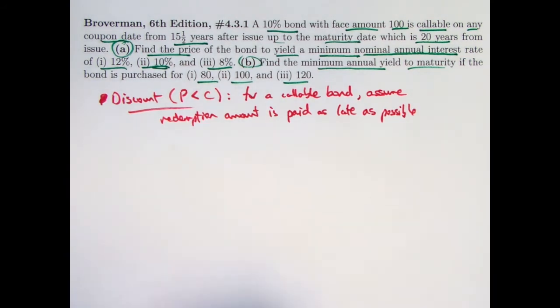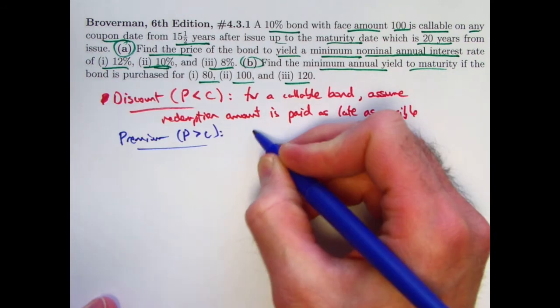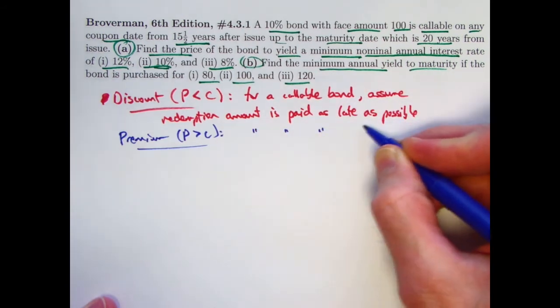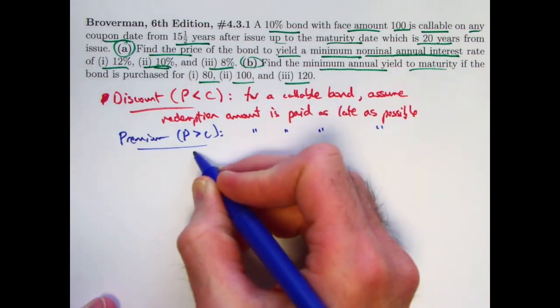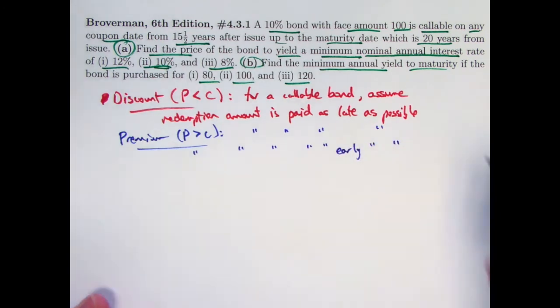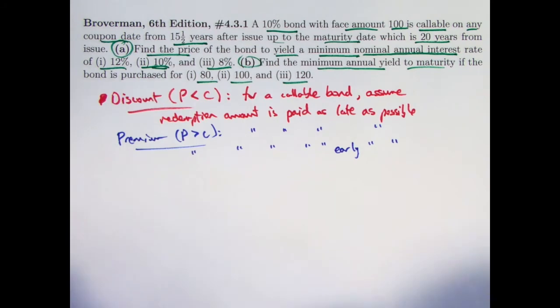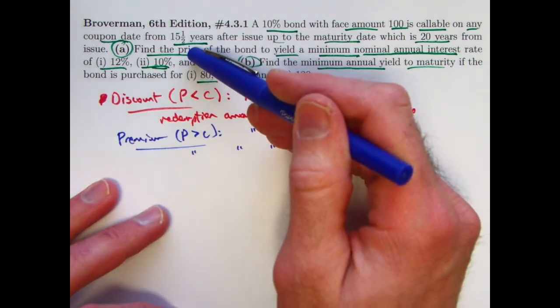On the flip side of that, if the bond is bought at a premium, p is bigger than c, for a callable bond, assume that the redemption amount is paid as early as possible. If you buy the bond at a premium, you're paying a lot, you're getting pretty high coupons to make up for that. They are paying you more than the interest that is owed every coupon period. They're paying their balance down. It would be best for you to keep getting those extra payments as long as possible. So worst case would be if it's redeemed as early as possible. In this case, that would be 15.5 times 2, n equals 31.